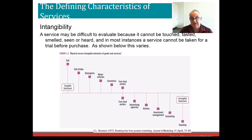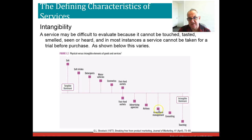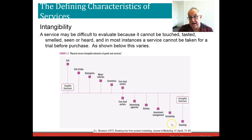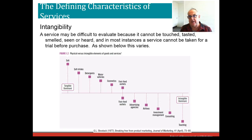Some of the key aspects of services include intangibility. As you can see in Figure 1.2 of your text, if we categorize services and products on a continuum, certain types of products are more tangible dominant, while intangibility gets higher when we move down to things like consultancy and teaching. Medical services might be another example. Of course, you need tangible things to provide these services — my computer, the room I'm sitting in today, and so on.